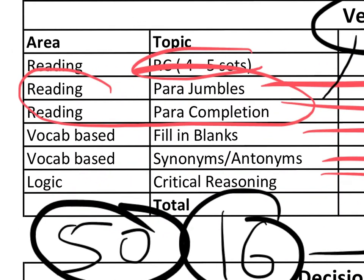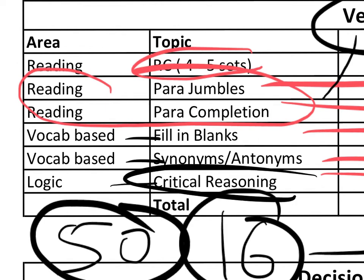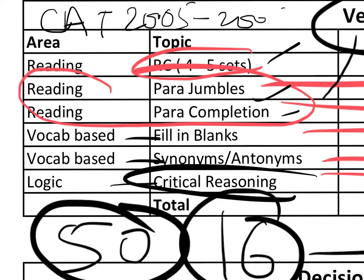To prepare, do a little bit of vocabulary, fill-in-the-blanks strategy, and go through some critical reasoning questions, para jumbles, para combinations, and RC. If you've prepared for CAT, this section will be very similar, except the RC here is harder than CAT's. Practice with the last five years' papers and CAT 2005 to 2008 — the verbal section from those years is an ideal benchmark and more than sufficient to crack this exam's verbal section.